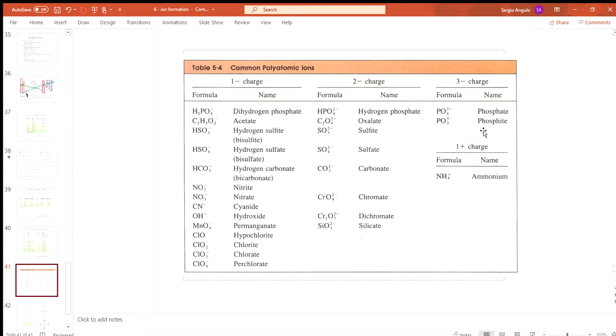There's just no getting around it—you just have to memorize the name, the formula, and the charge in order to use them effectively. The first column are all negative one charge groups of atoms.